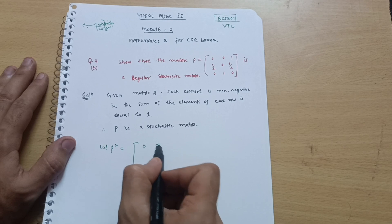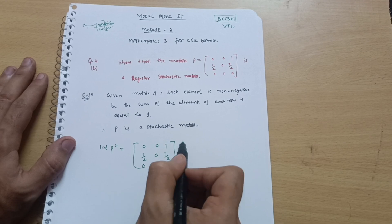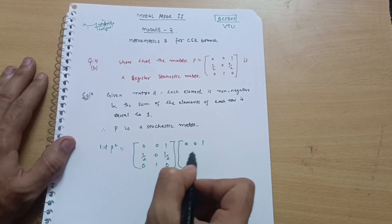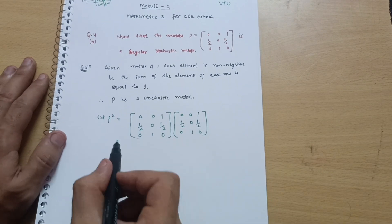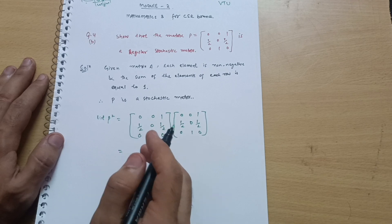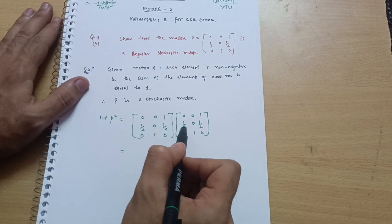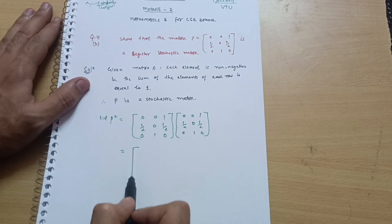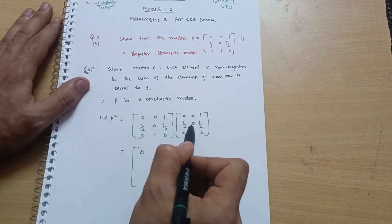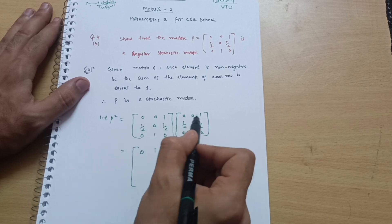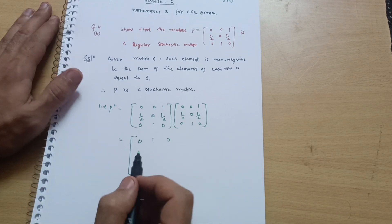P² = P × P. Take the matrix [[0,0,1],[1/2,0,1/2],[0,1,0]] multiplied by itself. For the first row: first column = 0×0 + 0×(1/2) + 1×0 = 0; second column = 0×0 + 0×0 + 1×1 = 1; third column = 0×1 + 0×(1/2) + 1×0 = 0. So the first row of P² is [0, 1, 0].